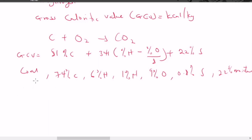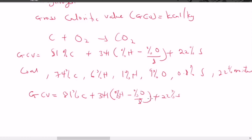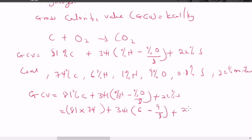Substituting into the formula: GCV = 81 × 74 + 341 × (6 − 9/8) + 22 × 0.8. Note that nitrogen and moisture are not included in the formula. The result gives a gross calorific value of 7773.97 kilocalorie per kilogram.